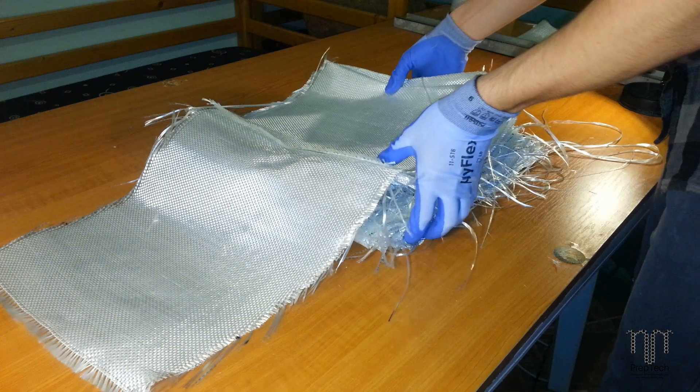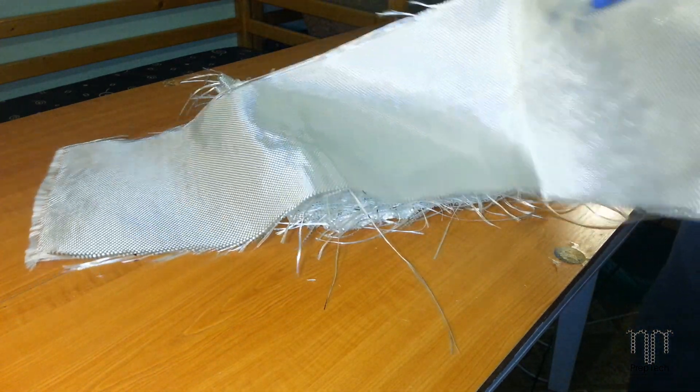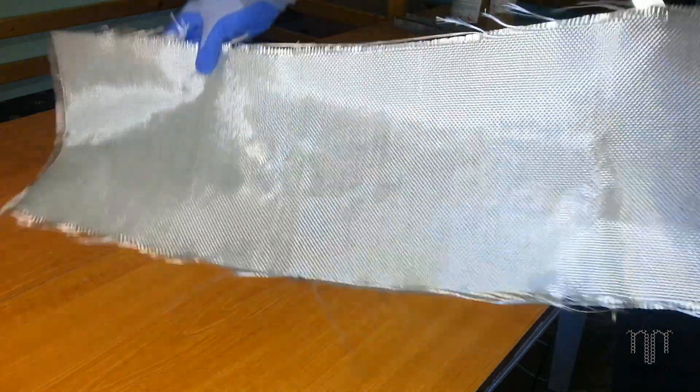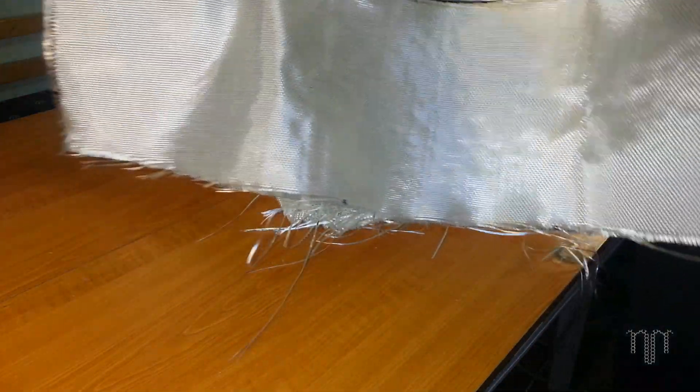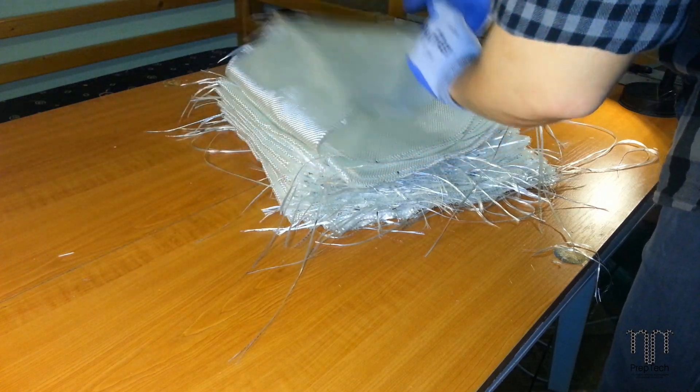Later on I cut these bigger parts into 33 by 30 cm pieces. I choose fiberglass because it is the cheapest composite fabric and in some light armored military vehicles they actually use it. When combined with resin, it has great mechanical properties. Let's start laminating.